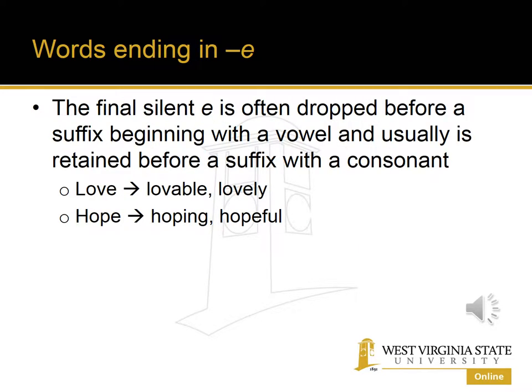The final spelling rule regards words that end in E. If the E is silent, then it is often dropped before a suffix beginning with a vowel, and it's usually retained with a suffix that begins with a consonant. For example, love — the E is silent in that noun.